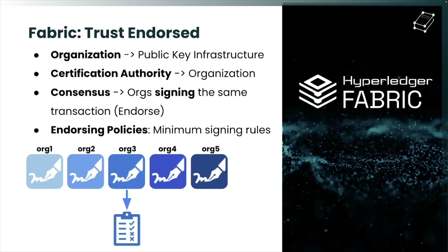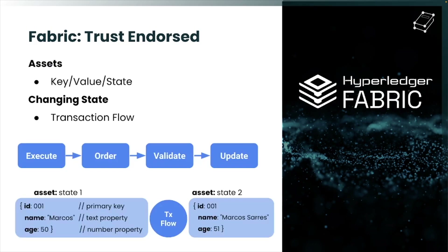When you compare Hyperledger Fabric to other blockchain technologies such as Ethereum, Solana, or Cardano, one of the main differentials is that those technologies use cryptocurrency or crypto assets to provide trust — for example, Ethereum uses Ether to execute smart contracts and validate blocks. That is not the case with Hyperledger Fabric: it does not use cryptocurrency, and instead uses endorsing policies to provide reliable registration inside the network.